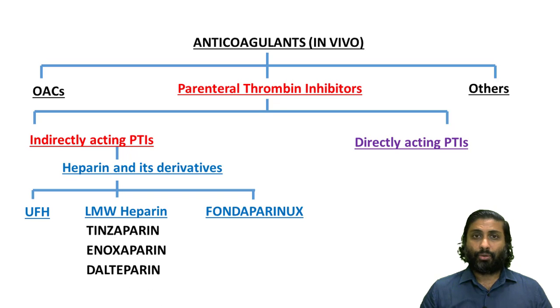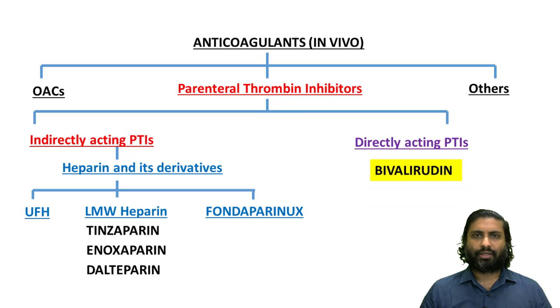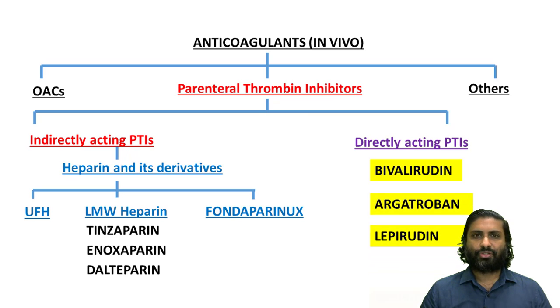The directly acting parenteral thrombin inhibitors include bivalirudin, argatroban, lepirudin, and desirudin.